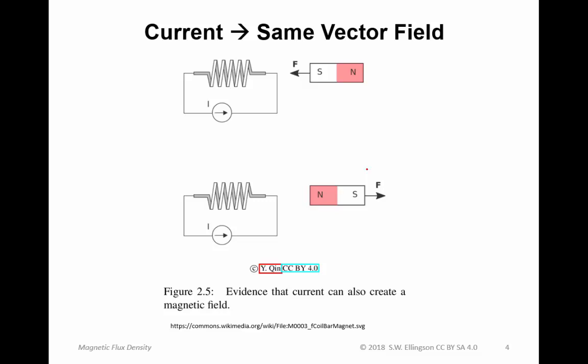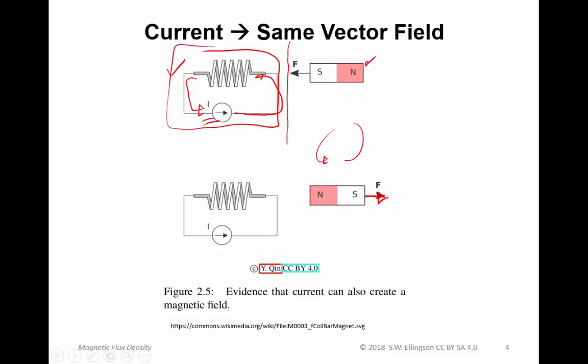The same thing happens with current. Here's an experiment where I replace one of the bar magnets with a coil fed with a current source. Current flows into the coil and out the other side, and the result is a magnetic field. If we bring in the other magnet, we see that this coil acts just like the original magnet. In fact, if I drew a curtain, you would not be able to tell whether there was a coil or a permanent magnet behind it — they work exactly the same.